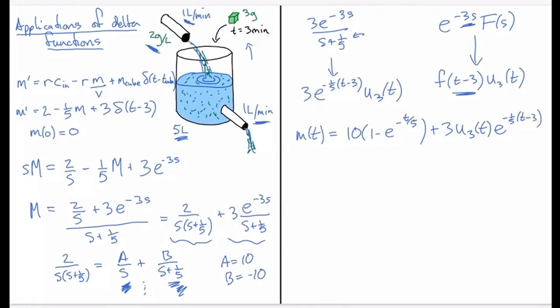And so what does this solution look like? There's the function M of t, and so we start off at 0 and the function starts to exponentially approach 10. And what we get is—there's two possibilities depending on when 3 happens, and so it turns out that 3 is early on in the approach, so it's there and then we get a jump of 3, and then the solution continues to approach 10 exponentially.